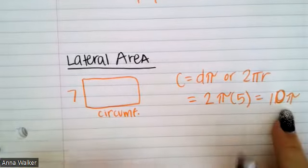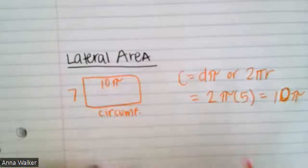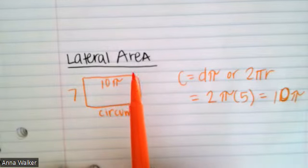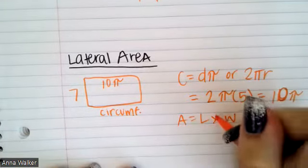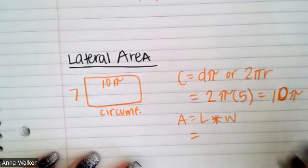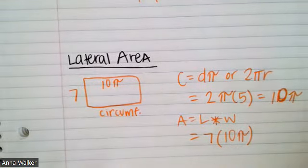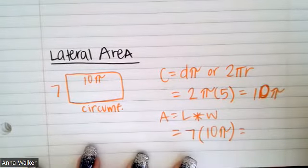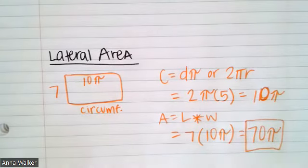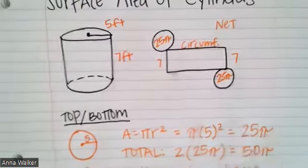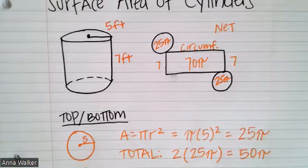I'm going to leave this in terms of pi until the very end. So the length of our rectangle is 10 pi. To find the lateral area, we find the area of the rectangle: length times width, which is seven times 10 pi. Seven times 10 is 70, so seven times 10 pi equals 70 pi. The lateral area of the cylinder is 70 pi, which corresponds to this rectangle in our net.